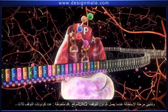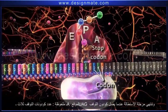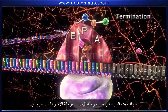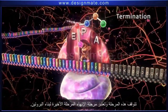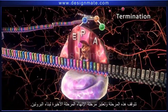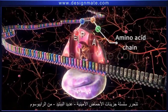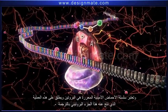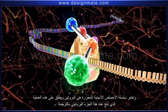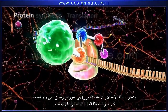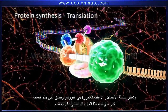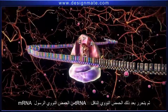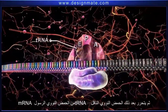Finally, when the UAG codon, or the stop codon, reaches the A site, elongation is terminated. Termination is the last stage of protein synthesis. The chain of amino acid molecules is released from the ribosome. This released amino acid chain is the protein, and this part of protein synthesis is known as translation.